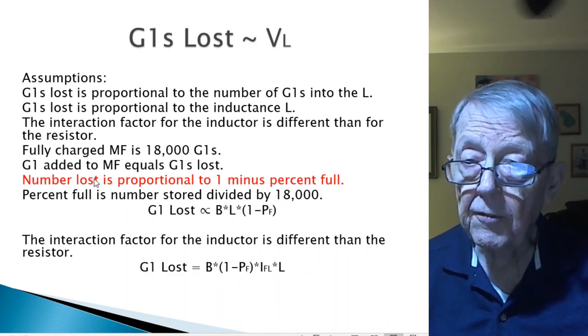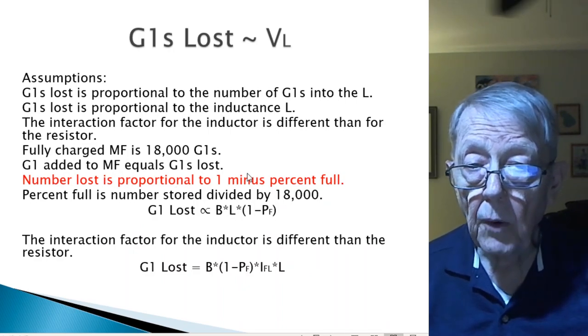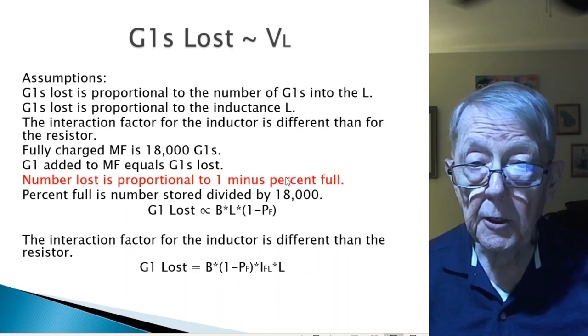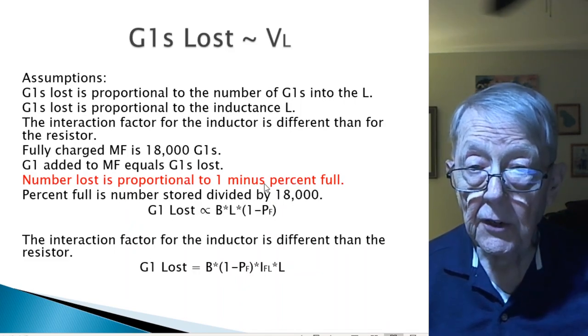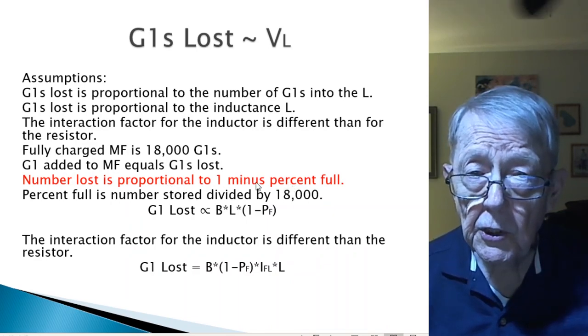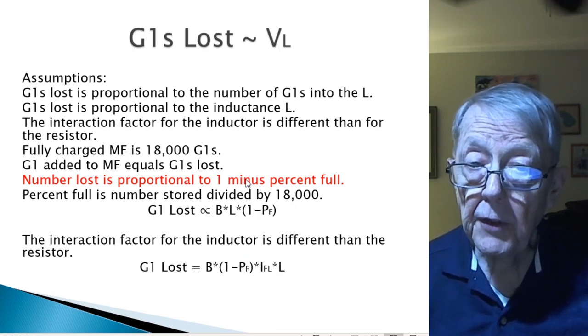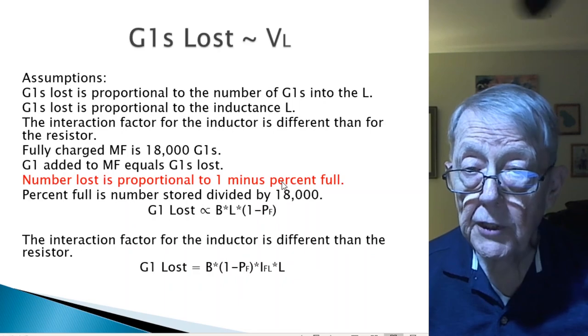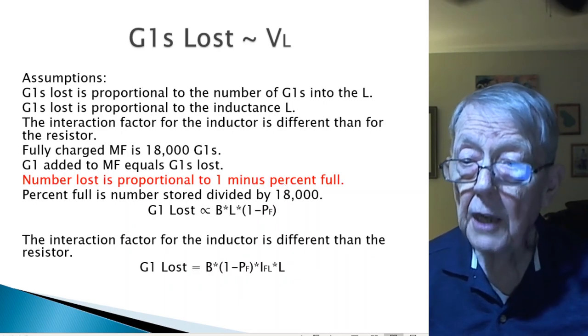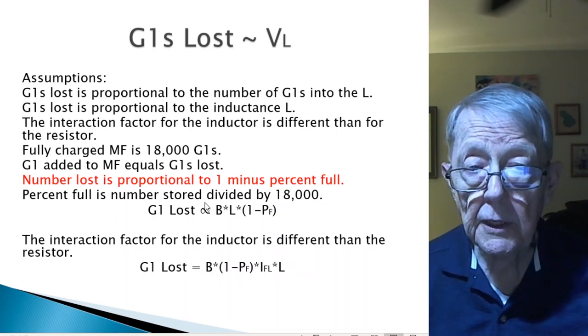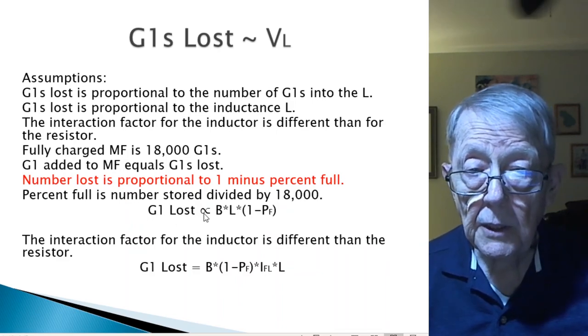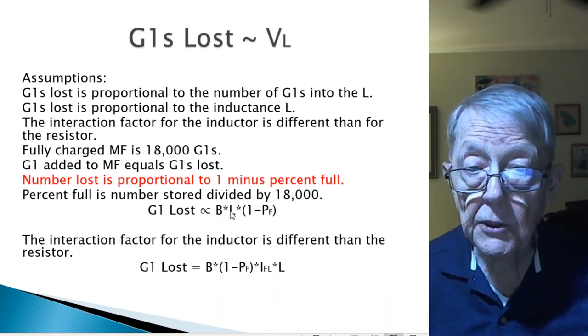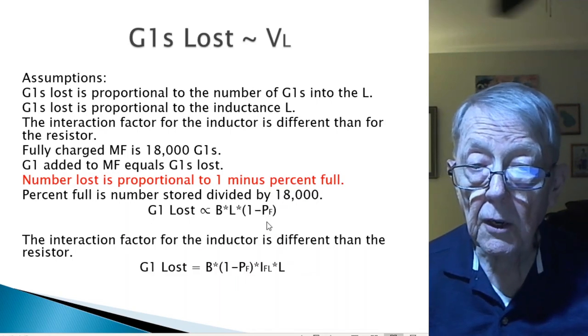The loss across the inductor: The G1s lost is proportional to the number of G1s that go into the inductor. That's the number B. G1s lost is proportional to the inductance. This is a simple understanding. The larger the coil, the more it can store. So the loss, the G1s lost is proportional to the inductance. The interaction factor for the inductor is different than for the resistor. You've got something more going on here. It's just not G1s hitting objects and scattering off and going away. It's now being spiraling through the wire in such a way that it gets lost into a magnetic field. And then there's the dynamics of the magnetic field going on. So I'm expecting the interaction factor for the inductor to be different.